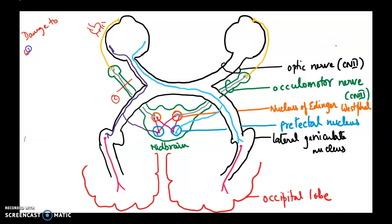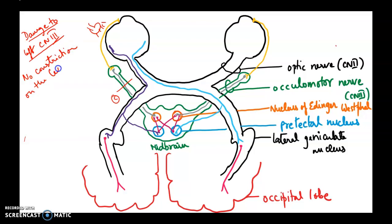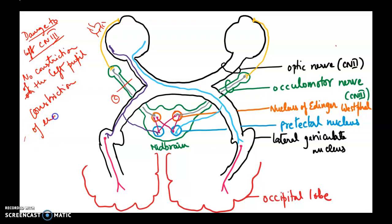The yellow neuron carrying the command to the sphincter pupillary muscle on the right-hand side will also work fine. So in condition C — damage to the left oculomotor nerve (cranial nerve 3) — we have no constriction of the left pupil, but we will have constriction of the right pupil.